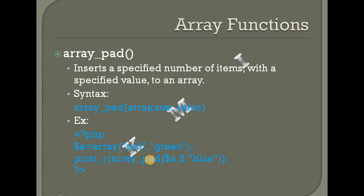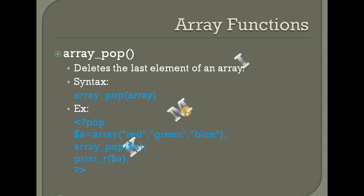Array_pad — insert a specified number of items with a specified value to an array. One value equal to an array. Array pad chooses array size.